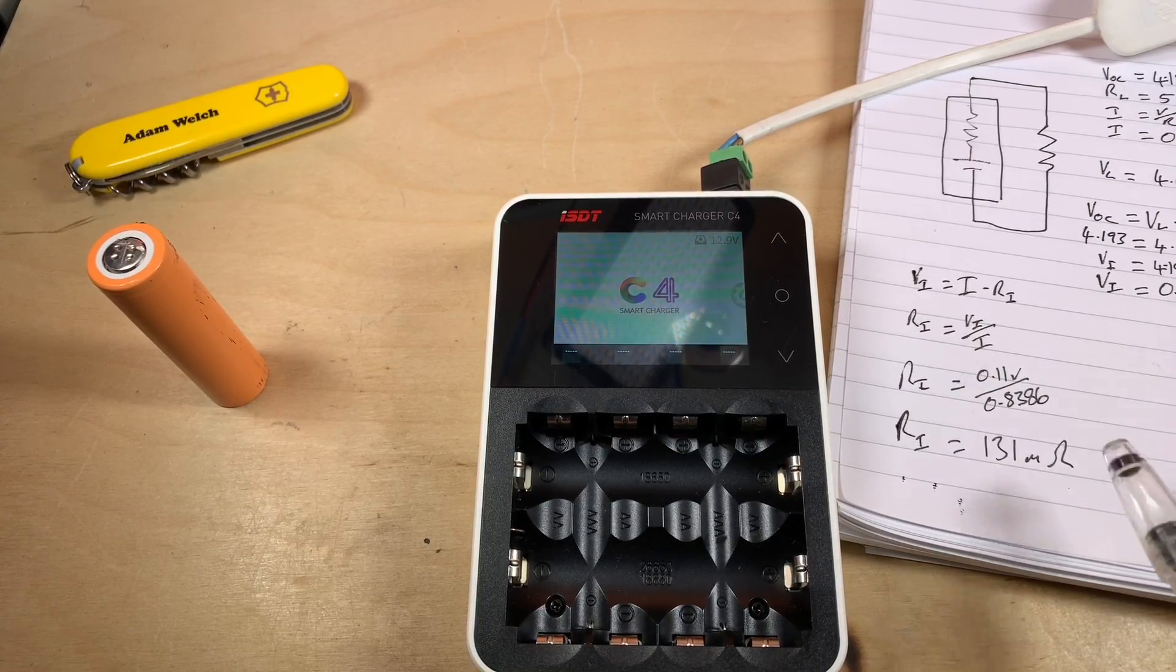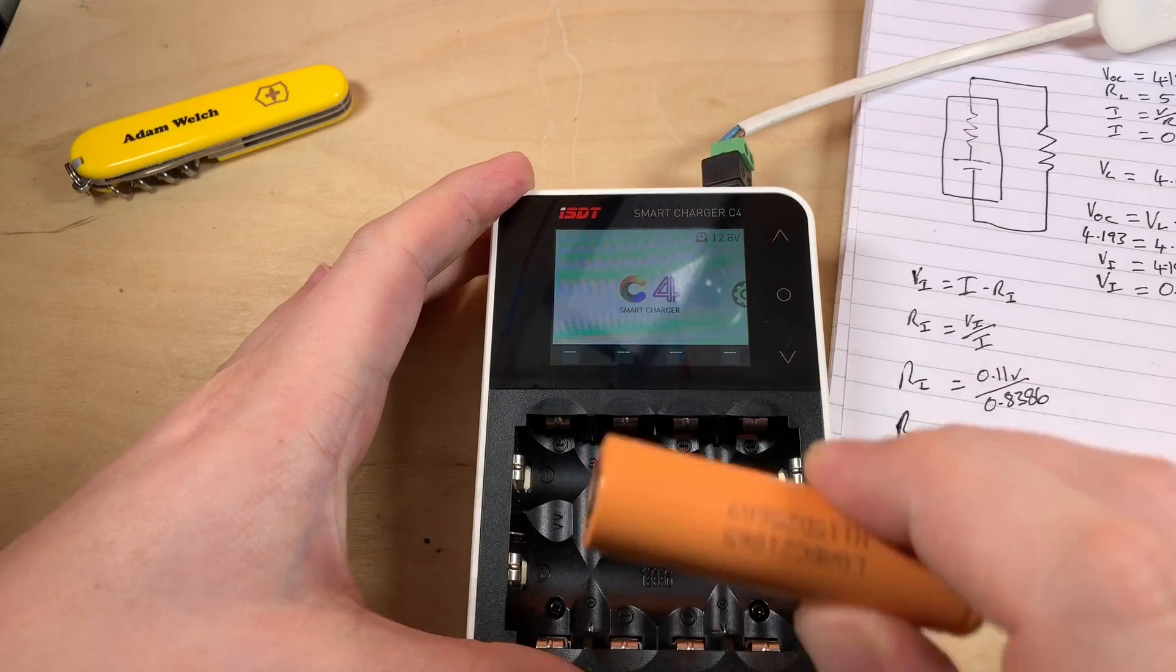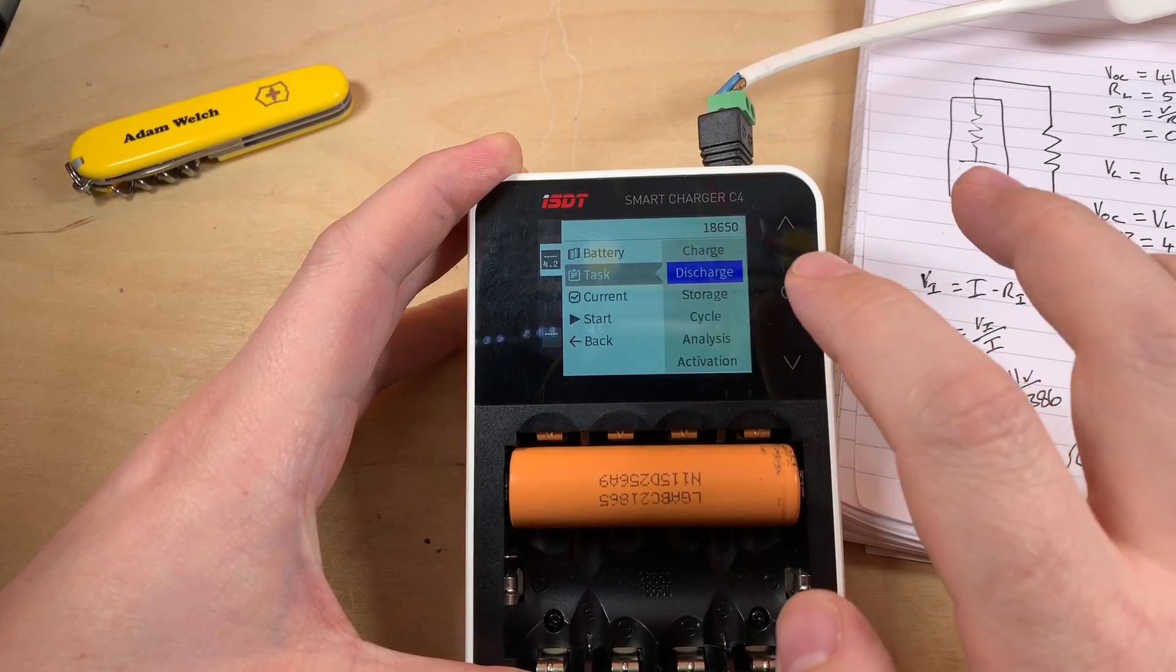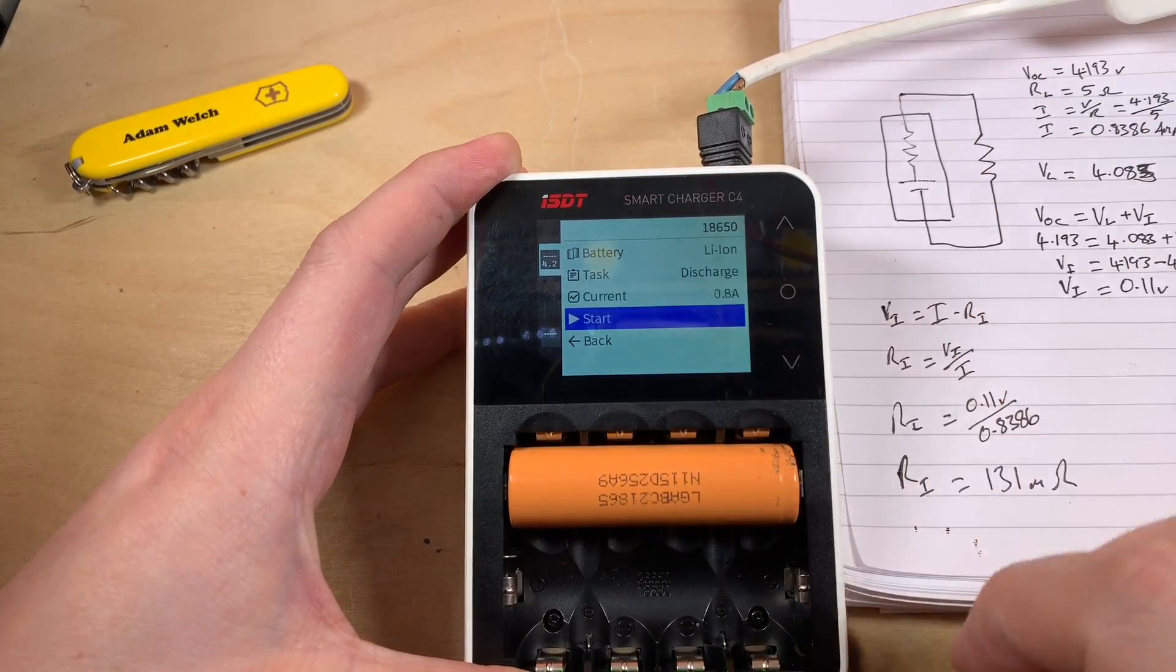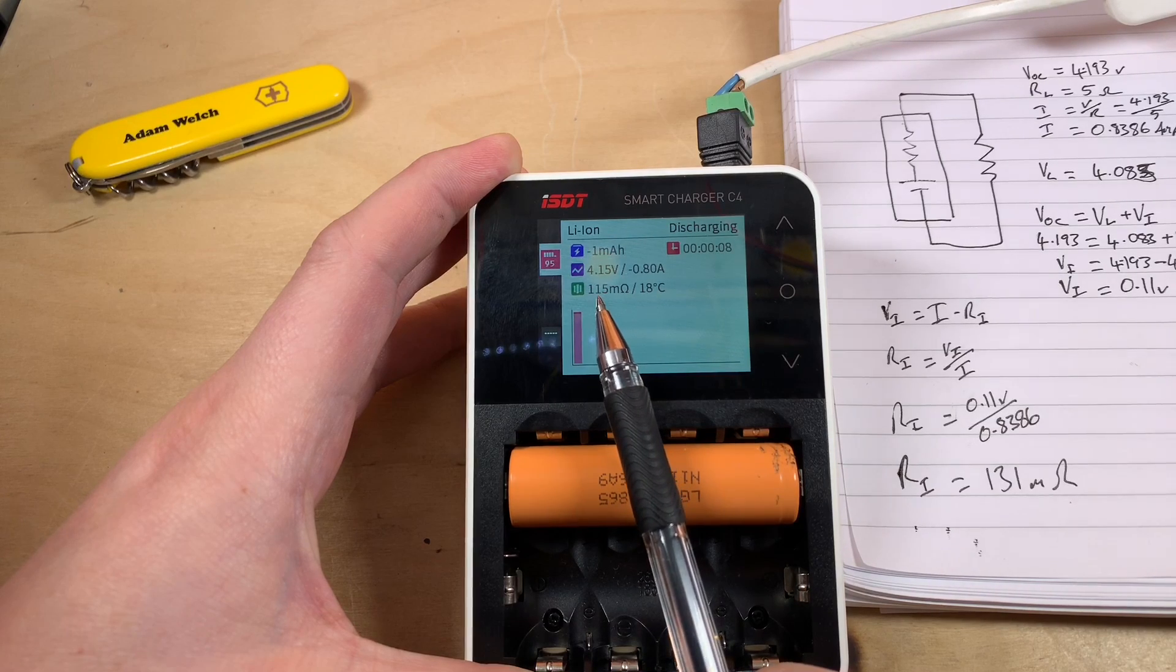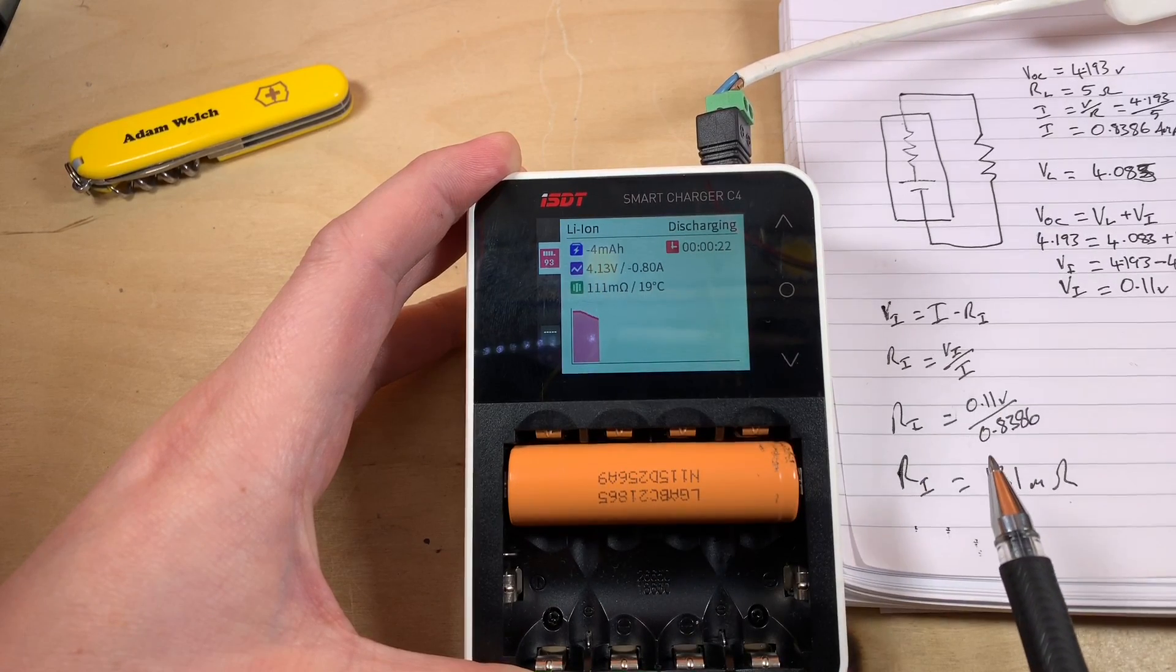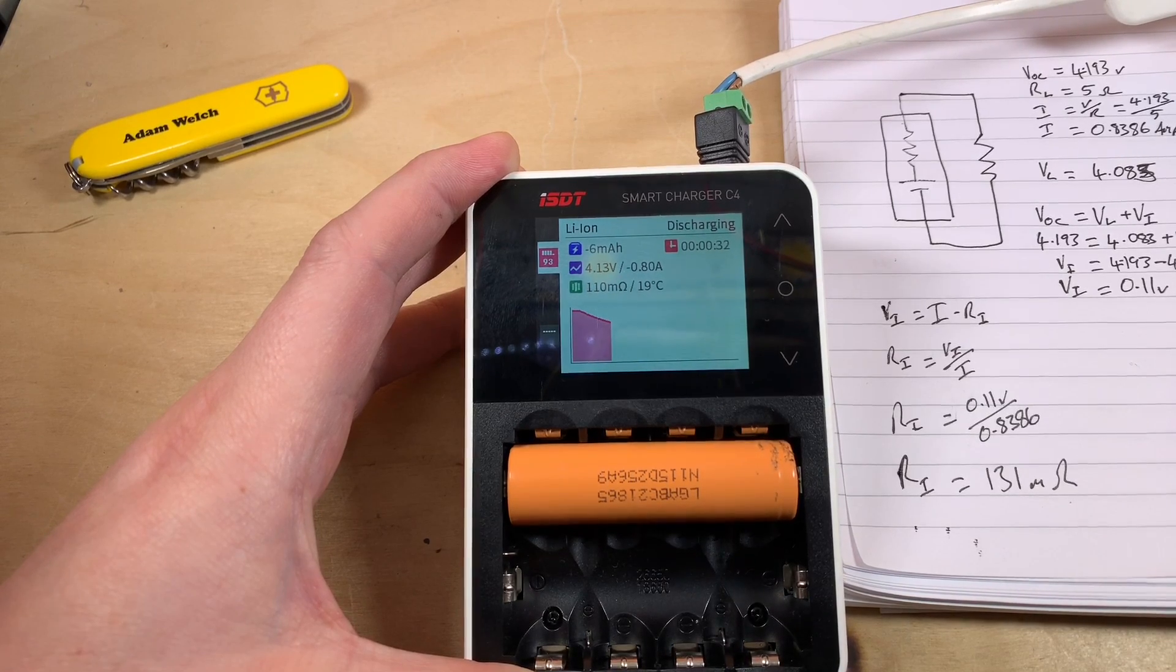Now here's the risky bit, because I probably should run this test a few times and take some sort of average, but I haven't and I'm not going to. But I'm going to pit my calculations here against this commercial option, the IST-DT smart charger C4, and I'm going to do it under the same conditions. I'm going to set a discharge going at around 800 milliamps. So this charger discharger should display an internal resistance, and oh, 115, 114 milliohms dropping slightly. So that's not a million miles away.